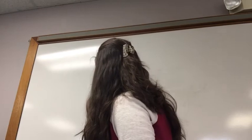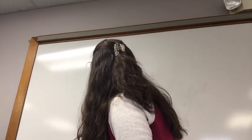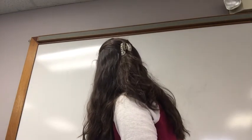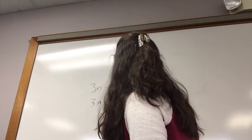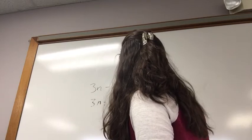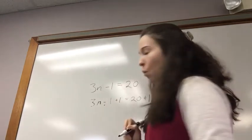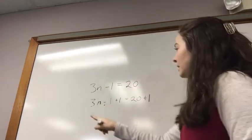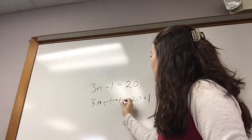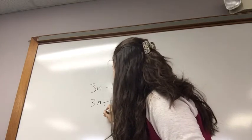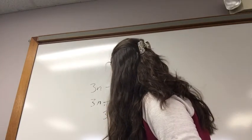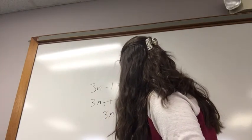So, we can set up a problem like this: 3n minus 1 plus 1 equals 20 plus 1. And we can do our math. Minus 1 plus 1 cancels out. 20 plus 1 is 21. So, that leaves us with 3n equals 21.